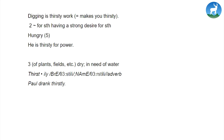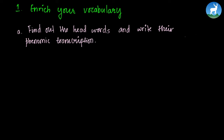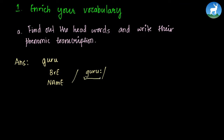Now let's begin the first activity to enrich our vocabulary: find out the headwords and write their phonemic transcription. A phonemic transcription is the pronunciation notation shown after BRE or British English, followed by a slash. The headwords are guru, mastery, and thirsty. For guru, the British and American phonemic transcriptions are shown here.